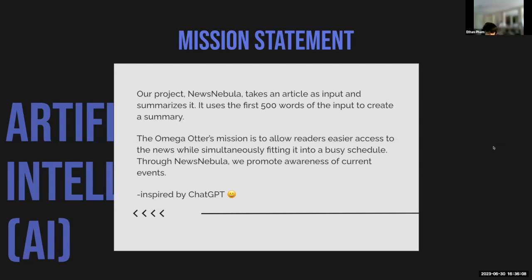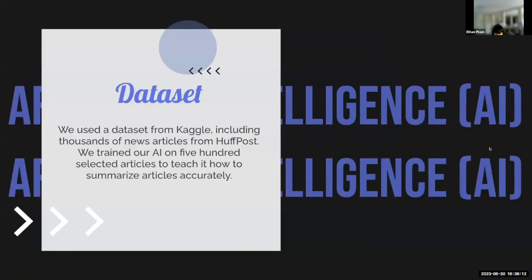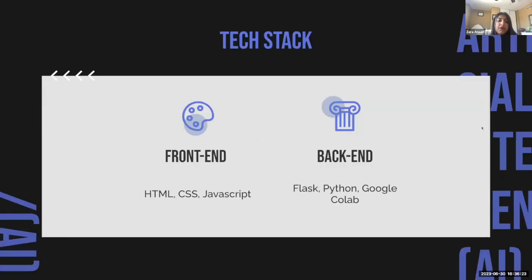Now Zara will go over the dataset and tech stack. We got our dataset from Kaggle, which included thousands of HuffPost articles, but we trained our AI model on 500 selected files to teach it how to summarize accurately. For front-end development we used HTML, CSS, and JavaScript, and for back-end we used Flask, Python, and Google Colab.